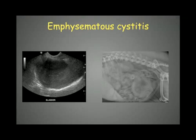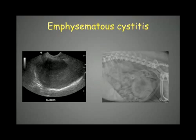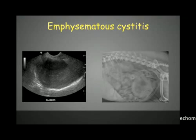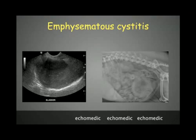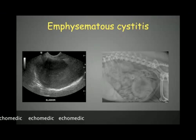Here is another example of emphysematocystitis with gas within the wall of the bladder. If the gas were free in the lumen, it should rise to the non-dependent side. Here it is staying along the dorsal wall, which means the gas is within the wall itself, as we can see on this radiograph.